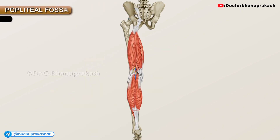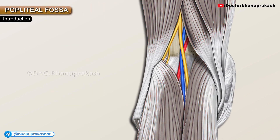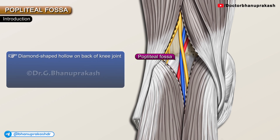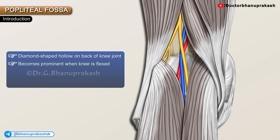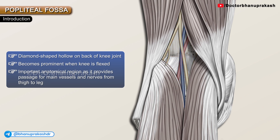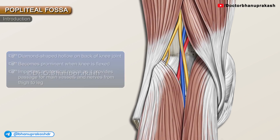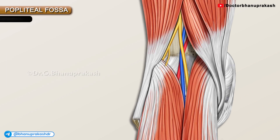The popliteal fossa is a diamond-shaped hollow on the back of the knee joint. It becomes extremely prominent when the knee is flexed. This fossa is an important anatomical area because it provides passage for important vessels as well as nerves from the thigh to the leg.